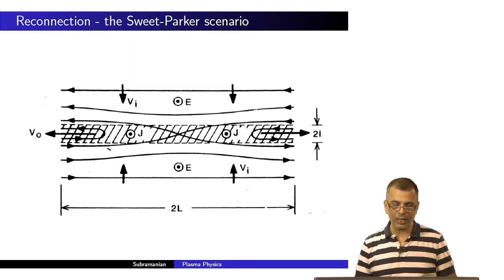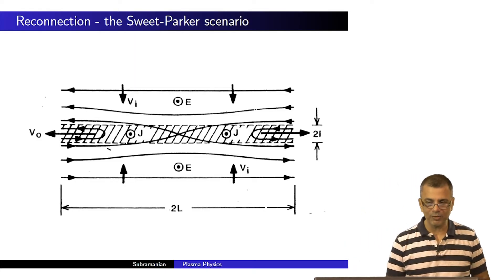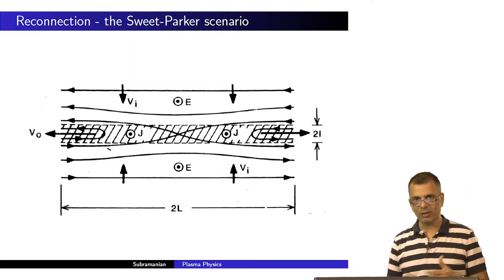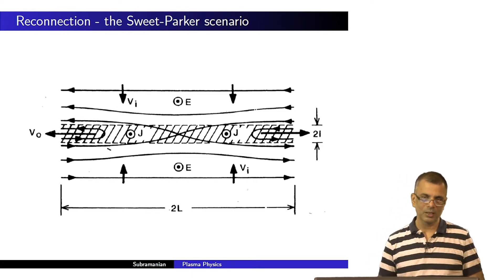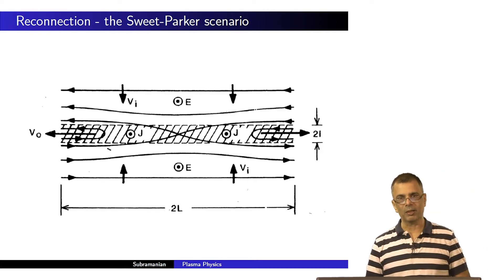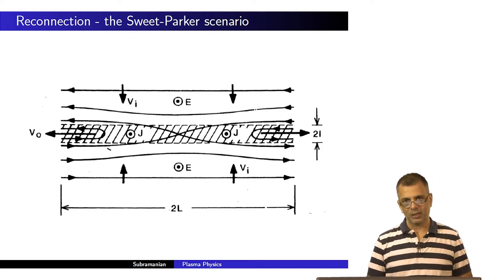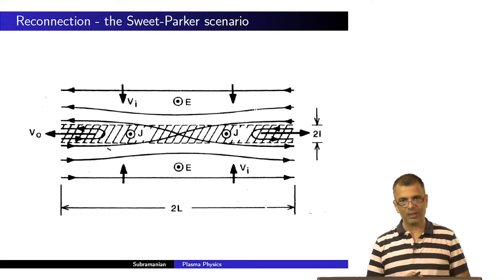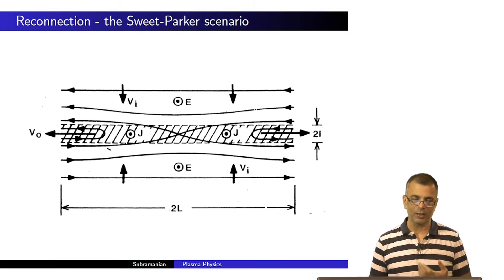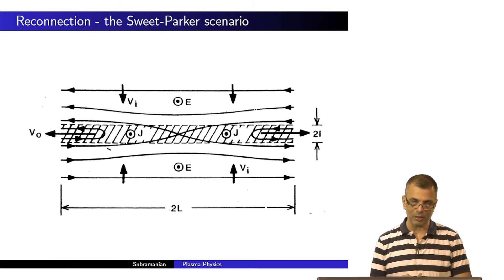Now we're back and let's delve into some more details of reconnection. Specifically, let's start thinking about something called the reconnection rate — the rate at which magnetic flux in particular is annihilated.